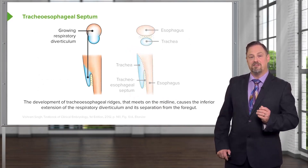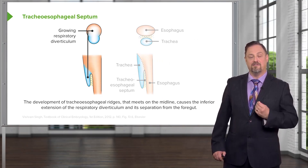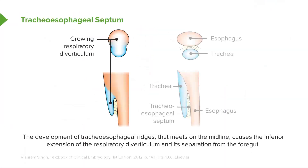This lecture will reiterate some of the points made when we discussed the respiratory system's development, in particular the development of the large airways. Early on we have a respiratory diverticulum growing off of the foregut and it is going to extend down to create the larynx, the trachea, and the bronchi. But to fully separate from the developing esophagus, we have a couple of tracheoesophageal ridges growing in from either side to meet on the midline to create a full tracheoesophageal septum. That's what finally separates the airway anteriorly from the food-carrying esophagus posteriorly.